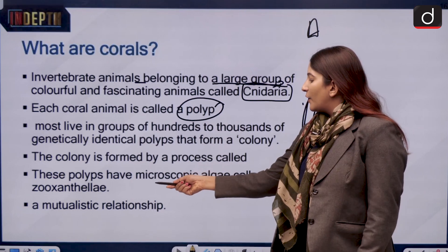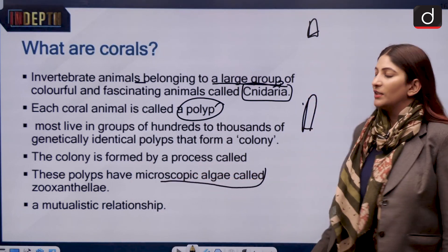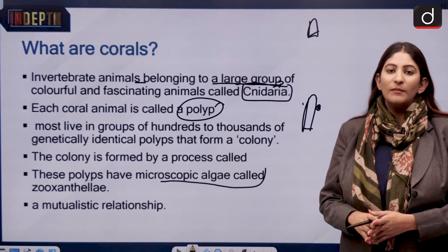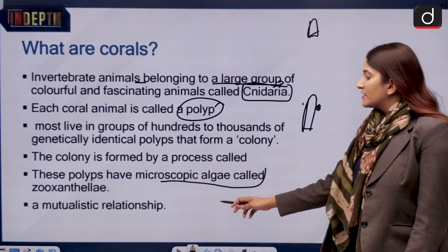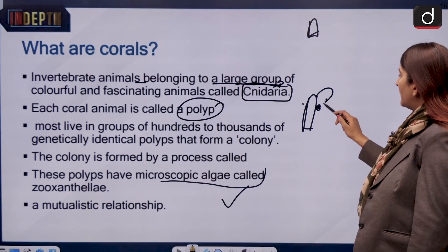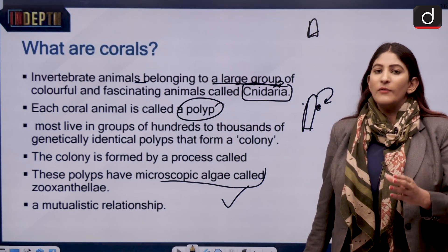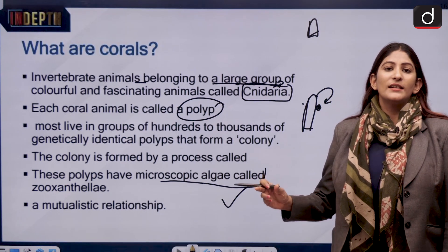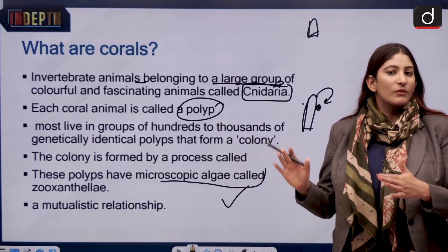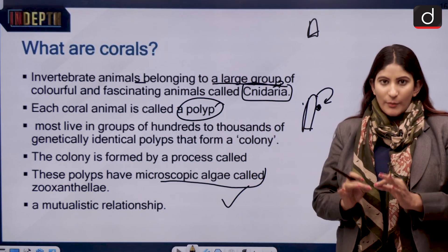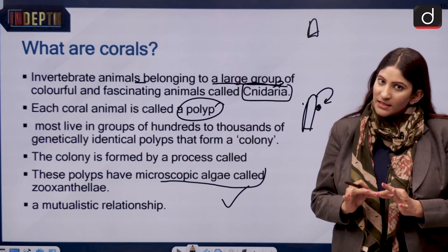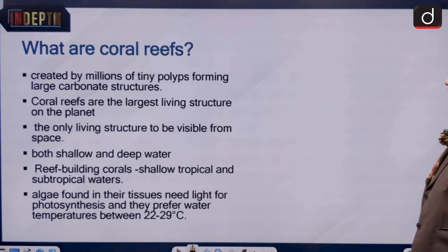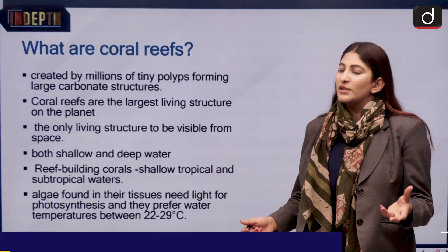These polyps have microscopic algae known as zooxanthellae. Zooxanthellae and the coral polyp have a unique mutualistic relationship — the polyps help the zooxanthellae get what they need for photosynthesis, and in return the zooxanthellae provide materials so the coral can carbonate their calcium. Because of zooxanthellae, the colorful nature of the polyps can be seen.